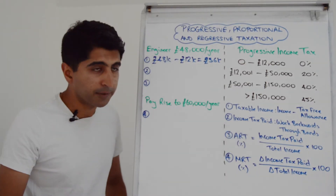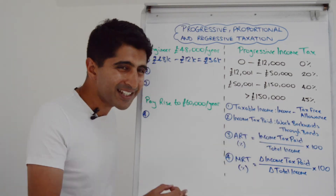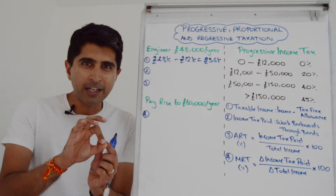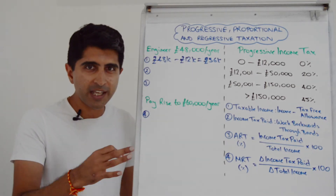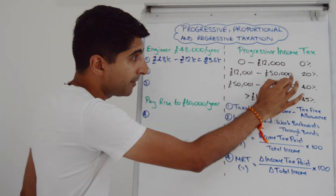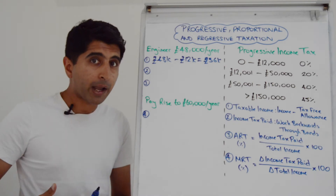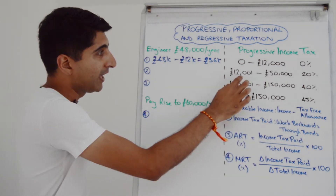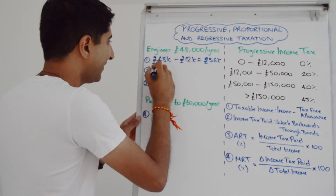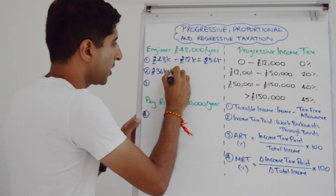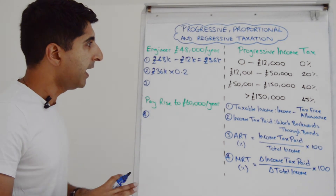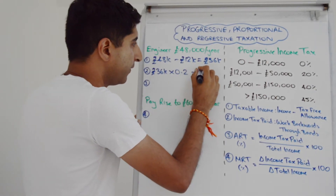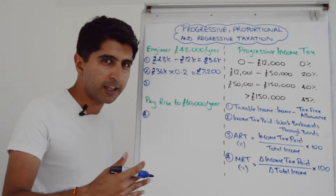The next thing is to work out total income tax paid. A helpful technique is to work backwards through the band. Place the engineer earning £48,000 into the relevant bracket — that's the 20% bracket. Only income above £12,000 up to £50,000 is taxed at 20%, so for this engineer it's the income between £12,000 and £48,000 — that's £36,000 at 20%, which is £36,000 × 0.2. The rest is completely tax-free. So total income tax paid is £7,200.